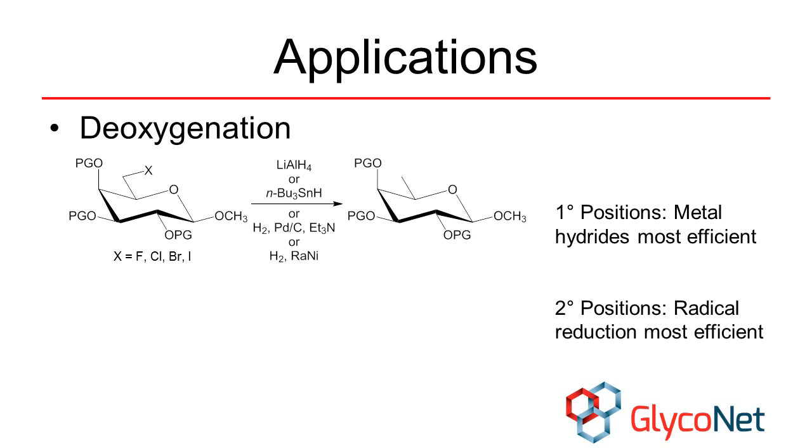Halides can be reduced by metal hydrides, radical reduction, or hydrogenation. Hydride reduction is more efficient for primary centers, while secondary centers are more easily reduced using radical reduction. Hydrogenations are most efficient with bromides and iodides.